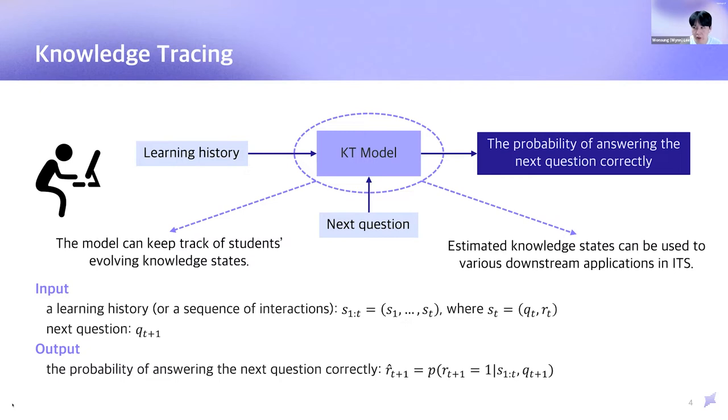a knowledge tracing model can keep track of students' evolving knowledge states over time. And the estimated knowledge states can be used in various downstream applications in ITS. This formulation is quite similar to sequential recommendation tasks or named entity recognition in NLP. But the main difference is that at each time step, the next question is given. Then, knowledge tracing performs just binary classification to predict the probability of getting a correct answer.